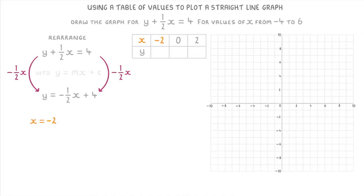So if we plug in x as minus 2, we get y equals minus 1 half times minus 2 plus 4. Which is y equals 1 plus 4. So y equals 5. Which gives us the coordinate minus 2, 5.